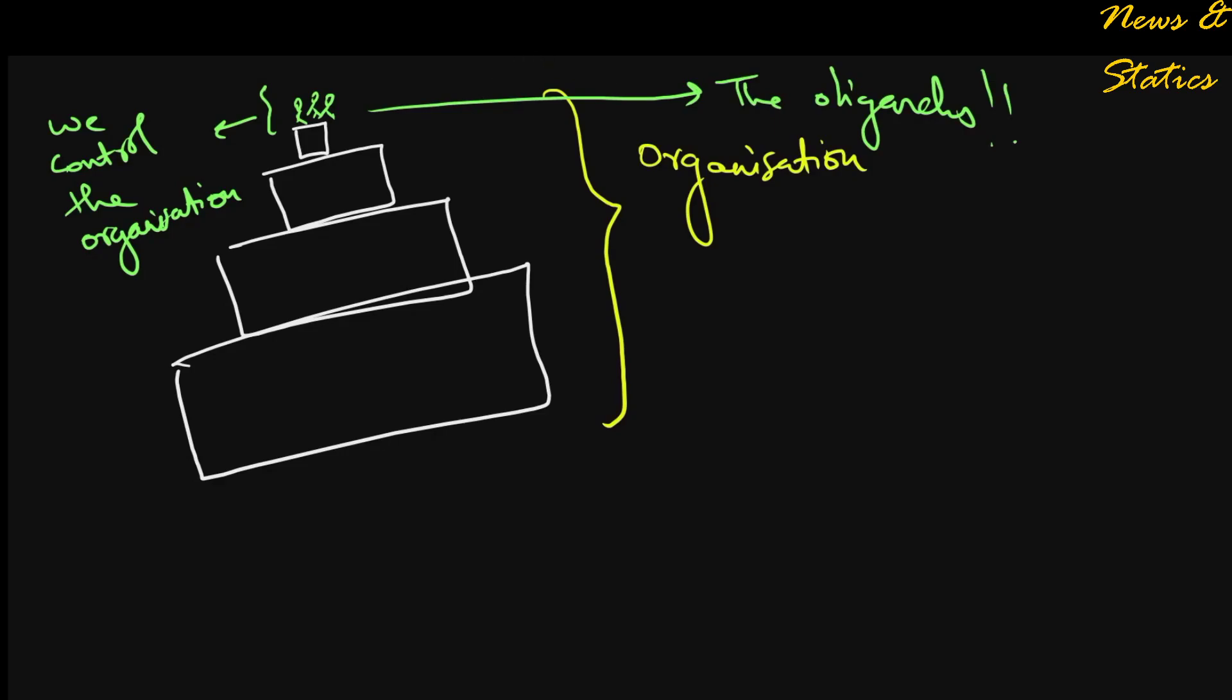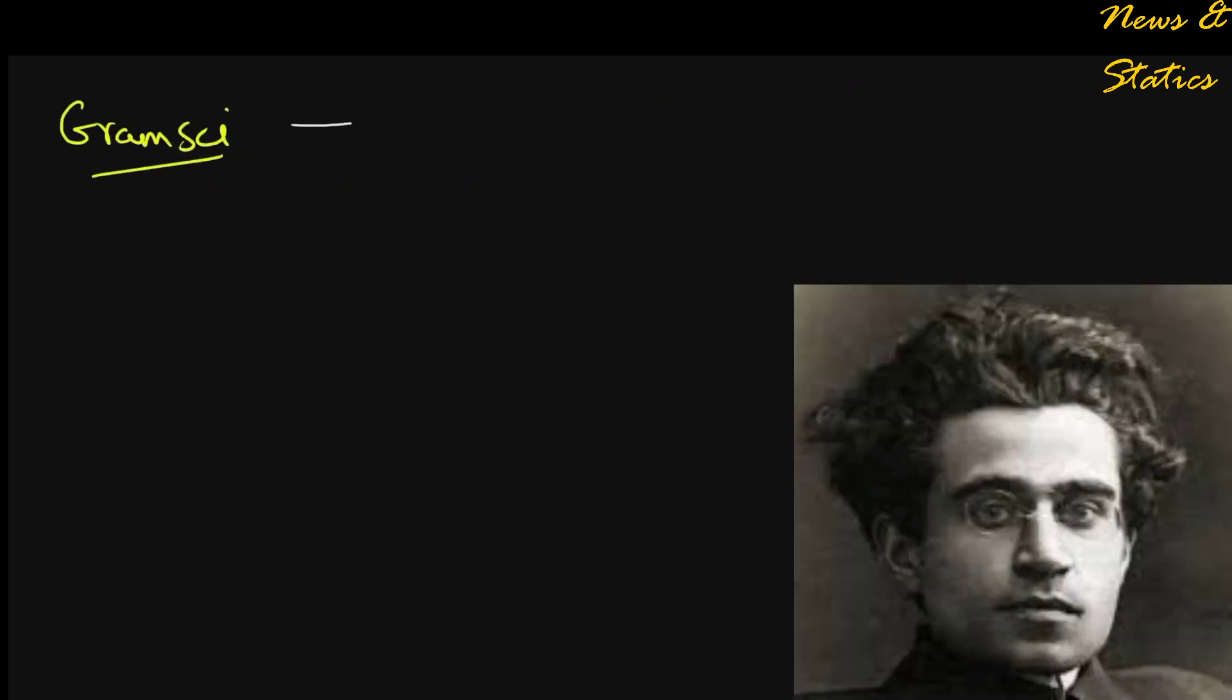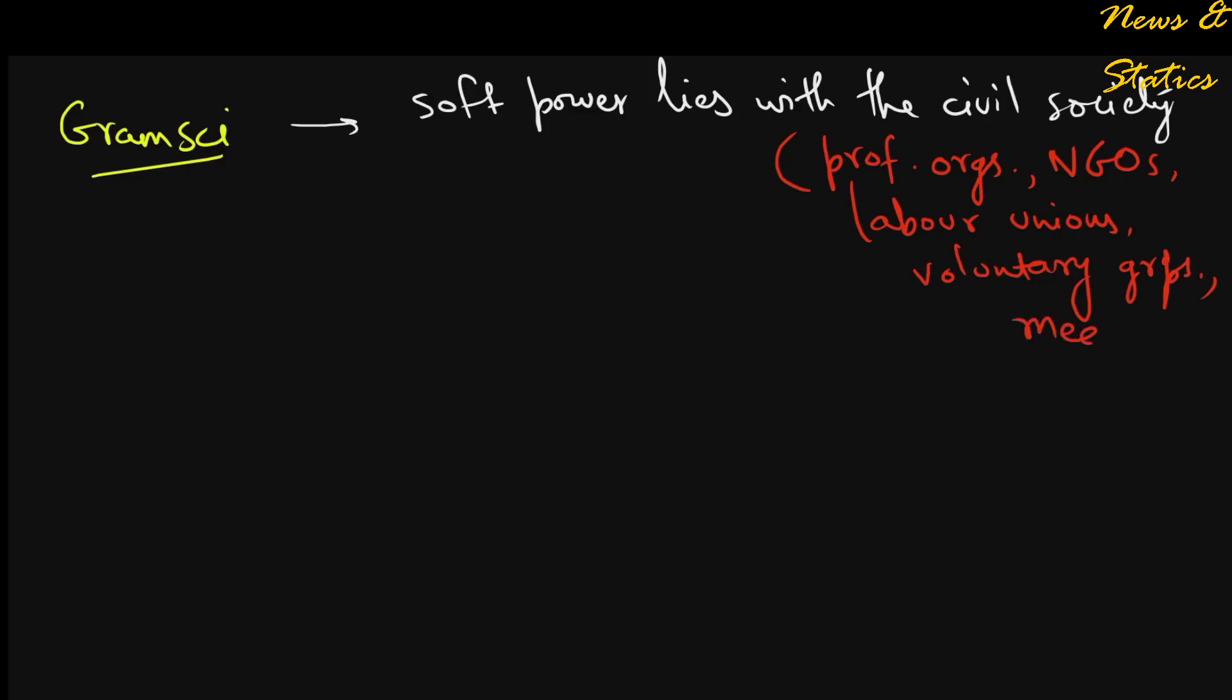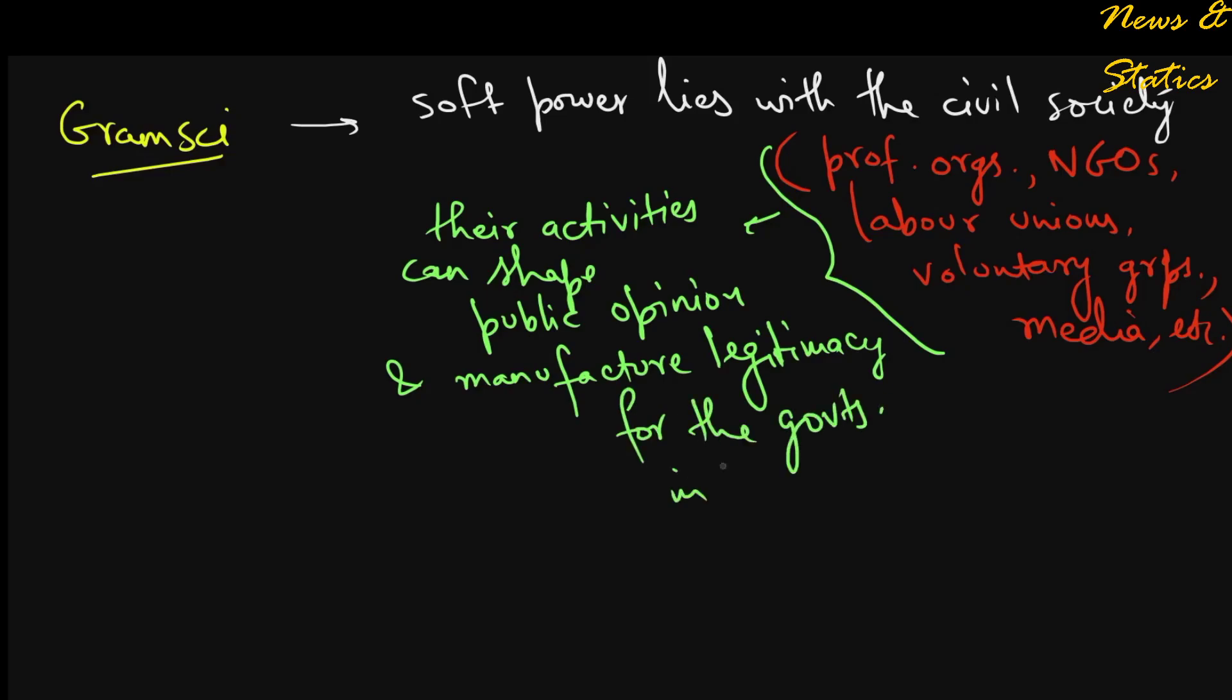But it is in this respect that one can appreciate the genius of thinkers like Antonio Gramsci and Michel Foucault. Gramsci explained how soft power lies with the civil society, with the professional associations, NGOs, labor unions, voluntary groups, media, etc. How the activities of these organizations shape public opinion and manufacture legitimacy for the government in the minds of the people without resorting to coercive force.